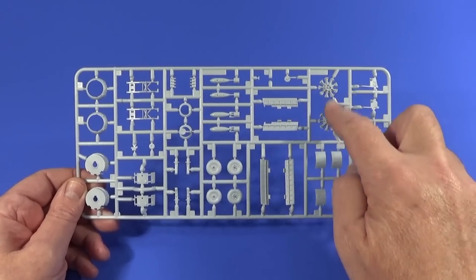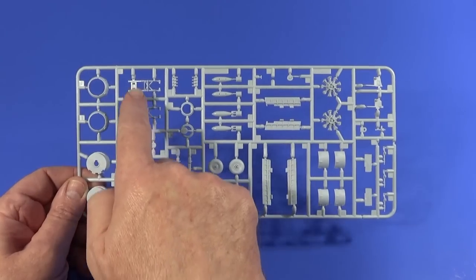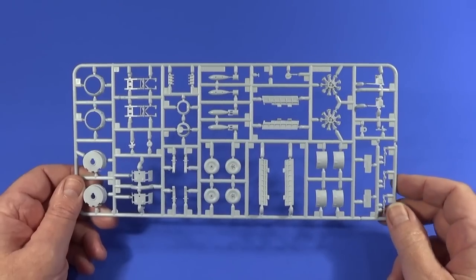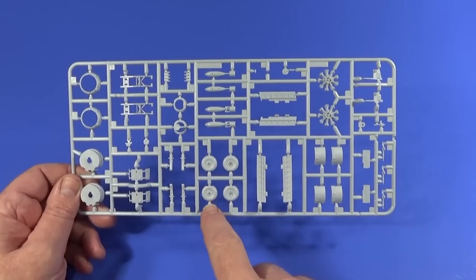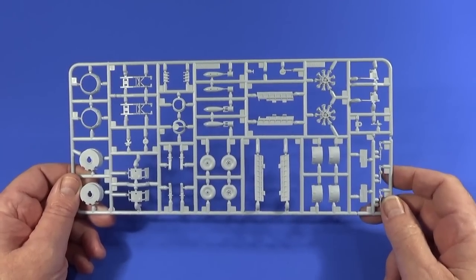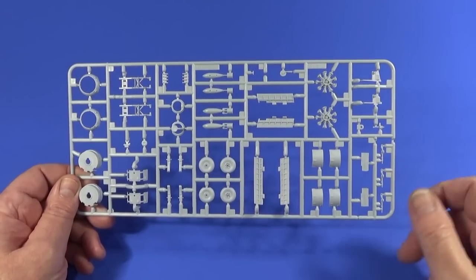Frame C, engine parts, cowlings, and so on. Undercarriage, a couple of bombs here, bits and pieces of gunnery I think, main wheels with a flat spot for weighting, which is nice. Flaps here and there, and some armament as well.